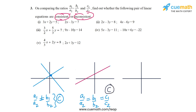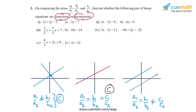The third possibility is that A1/A2 equals B1/B2, but these two ratios are not equal to C1/C2. In this case, the lines representing the pair of equations will be parallel. Because they are parallel, they will never intersect, which means this pair will have no solution — so this pair will be inconsistent. In the first two possibilities the pair is consistent, and in the third possibility the pair is inconsistent.